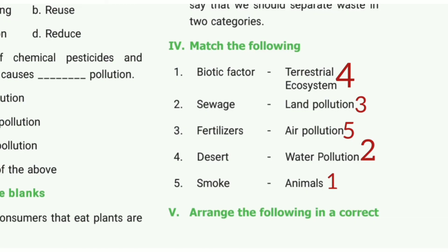4th one: desert. The answer is terrestrial ecosystem. 5th one: smoke. The answer is air pollution.